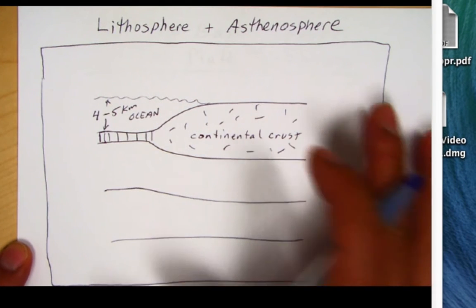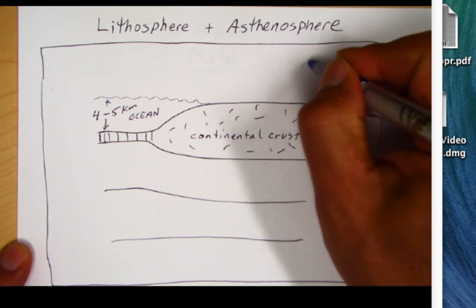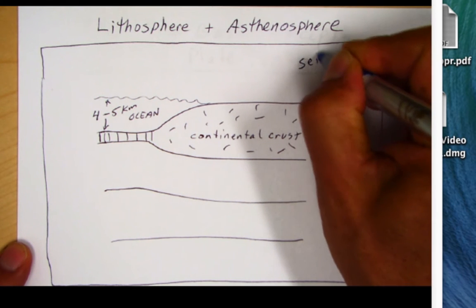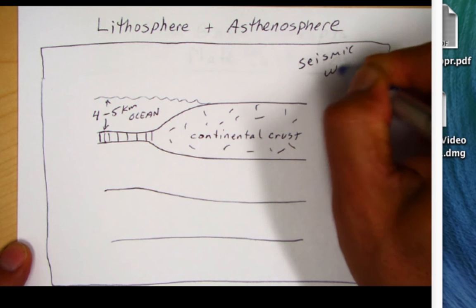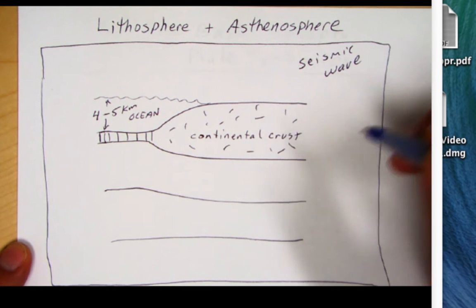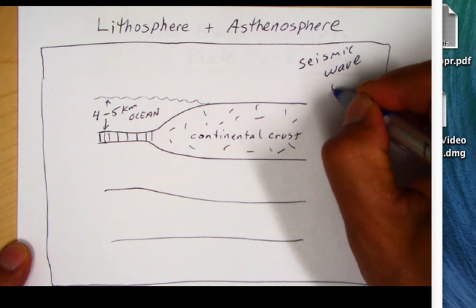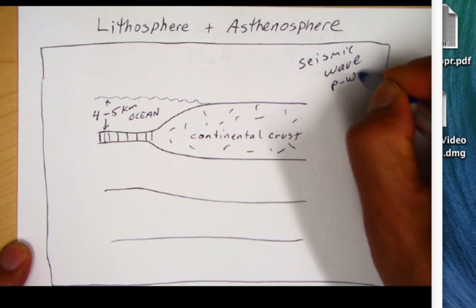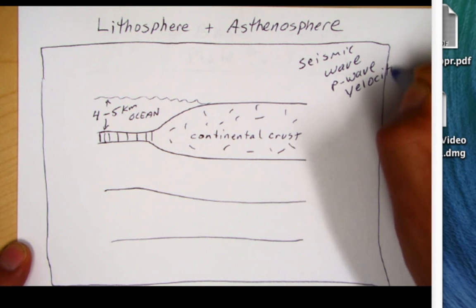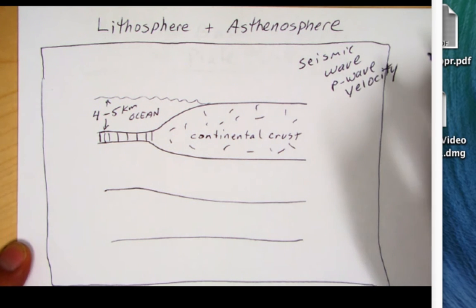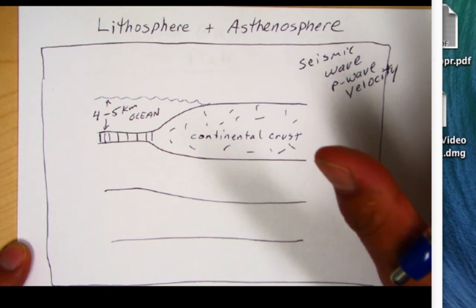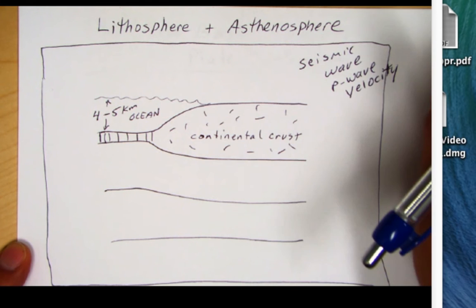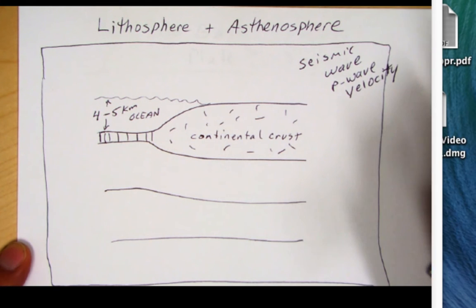We'll get to those words but first we want to talk about looking within Earth again. Remember seismic waves are like x-rays that we can look inside the earth, especially the velocity of the p-wave. When p-waves move through rocks or through layers in the earth, they change velocities. When they encounter harder material they'll speed up. When they encounter weaker material they'll slow down.